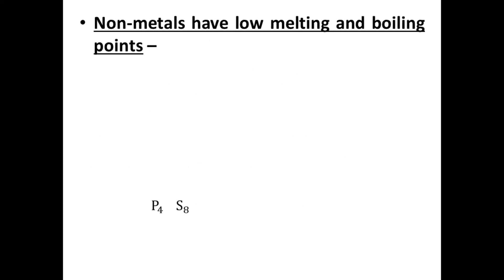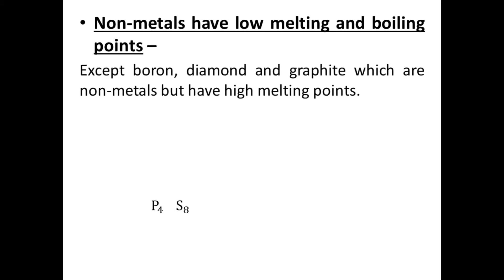Next property: non-metals have low melting and boiling points. Metals had a high melting point, but non-metals have low melting and boiling points. Exceptions are boron, diamond, and graphite, which are non-metals but have high melting points.